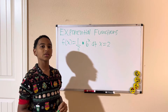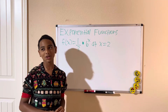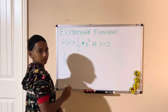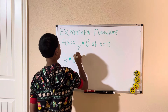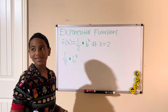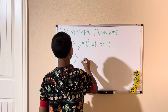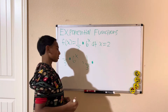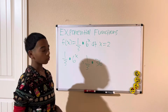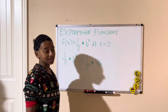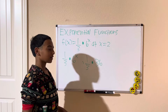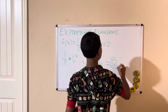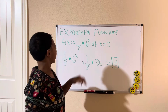At x equals two, we're trying to evaluate this function, so we're going to plug in x equals two. It's going to be one third times six to the power of two. Six squared is thirty-six, and one third times thirty-six is thirty-six divided by three, which is twelve. That's what you get if you evaluate this function at the given value.